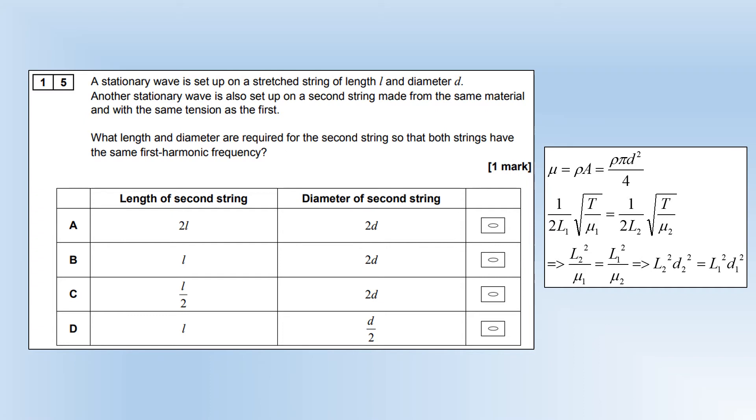I'm going to equate the two equations for their fundamental frequency together with L1 and mu1, L2 and mu2. But the tension is the same, so it cancels out. Then I'm going to rearrange to get the expression we have at the end. If they're going to be equal to each other, whatever we do to L1, we need to do the opposite to D1. The only column that meets that is C. We've halved the length, so we need to double the diameter.